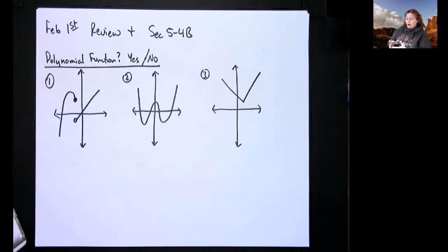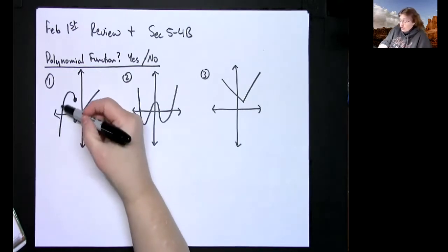recognize whether or not these are polynomial functions. The two main things are: are they smooth and are they continuous? Can you draw them without lifting your pencil? That would be the continuous part. And then the smooth part, no cusp or sharp edges on the graph.